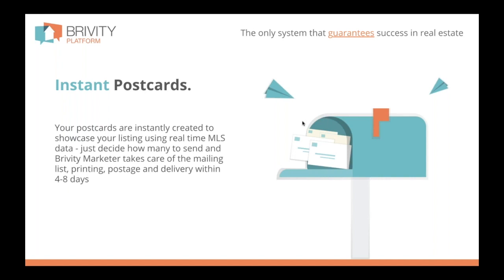Then we mail it — postage included — and somewhere between four and eight days from when you place that order, it arrives. The way it works is: a listing goes live in the MLS, we see it come in on the feed, we create the postcard, and then Jordan gets a little email notification saying her campaign is ready on her new listing at 123 Main Street. She can go in and in basically one click determine how many she wants to send — there's a default, so she could have set it to always send 300 — then she hits send and that postcard goes off to the printing company.